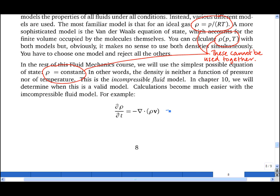If I expand the right-hand side using the product rule, I get minus rho divergence of the velocity minus V dot grad rho.